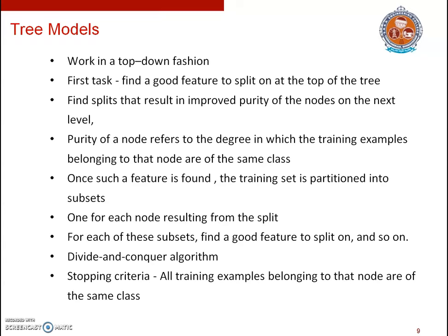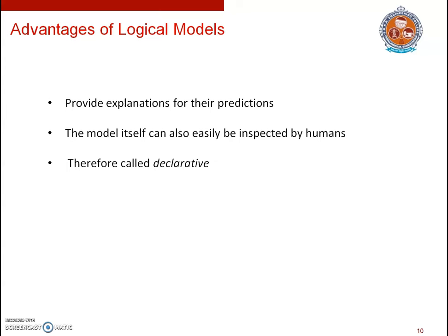An interesting aspect of logical models which sets them apart from most geometric and probabilistic models is that they can to some extent provide explanations for their predictions. For example, a prediction assigned by a decision tree could be explained by reading the conditions that led to the prediction from root to leaf. The model itself can also be easily interpreted by humans, which is why they are sometimes called declarative.